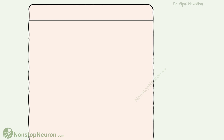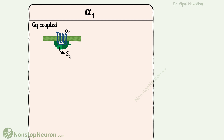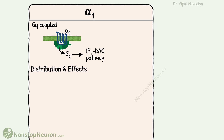Talking about the details of alpha-1 receptors, they are GQ-protein-coupled. That means they activate the IP3-DAG pathway of intracellular signaling. As they are GQ-coupled, they usually cause a stimulatory effect on the cell. Now let's see their distribution and what effects they produce when stimulated.